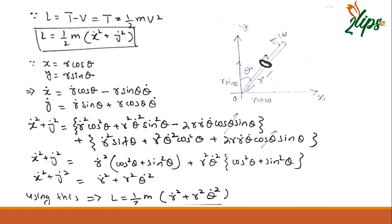This term comes from X dot squared and this term will come from Y dot squared. These two terms will cancel out because they are same and opposite.